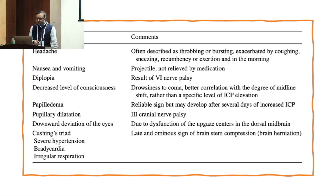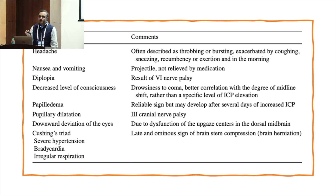Papilledema and pupillary dilatation occur because of third nerve palsy. If it comes down to the Cushing's triad, those are ominous signs of brainstem herniation. The triad is: hypertension, bradycardia, and irregular respiration.